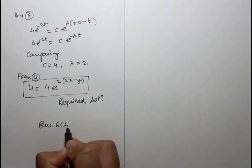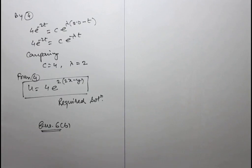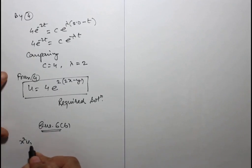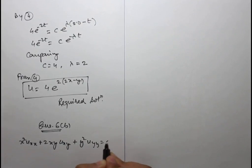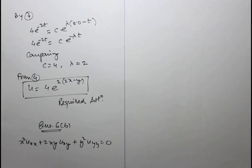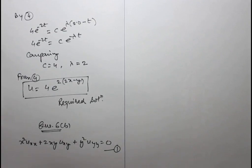Question 6 part B: obtain the canonical form of the equation x²uxx plus 2xy·uxy plus y²uyy equals 0, and hence find the general solution.